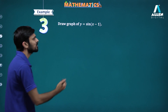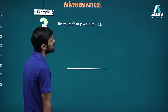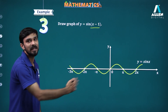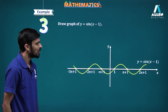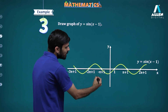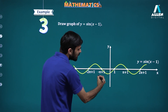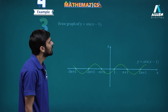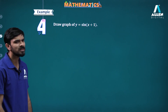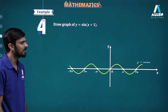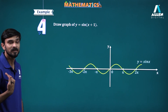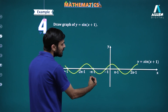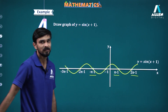For y equal to sin(x minus 1), this is the graph of sin x shifted one unit rightwards. So when the point of intersection was nπ, now it has become nπ plus 1. And for the graph of y equal to sin(x plus 1), it will be shifted one unit towards the left, so the point of intersection with the x-axis will become nπ minus 1.